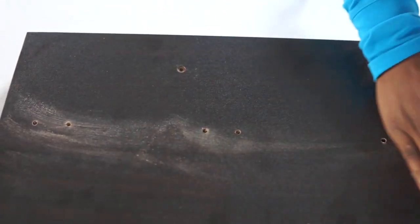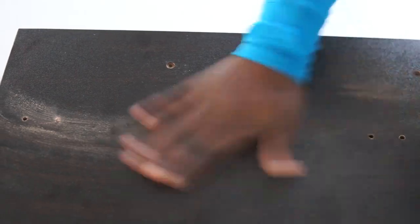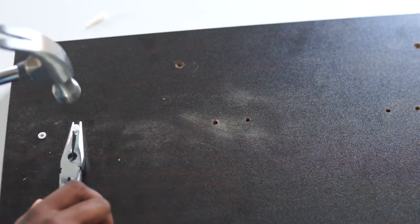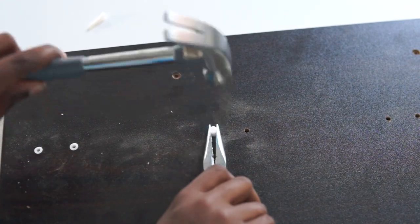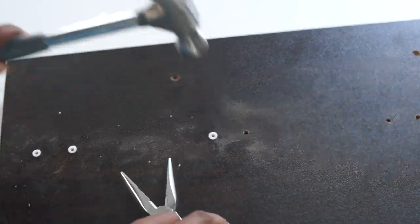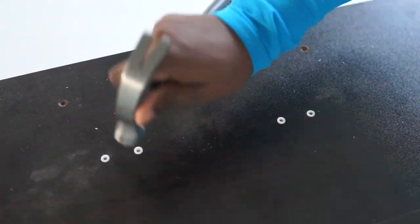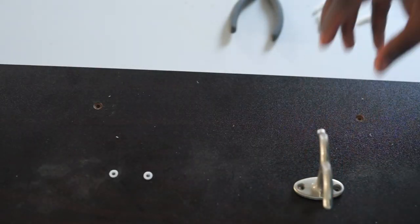Once you've made the holes, you want to carefully insert the anchors. With drywall, they're really easy to insert in, but with this MDF wood type of particle board, I had to use extra help in order to hammer them in.